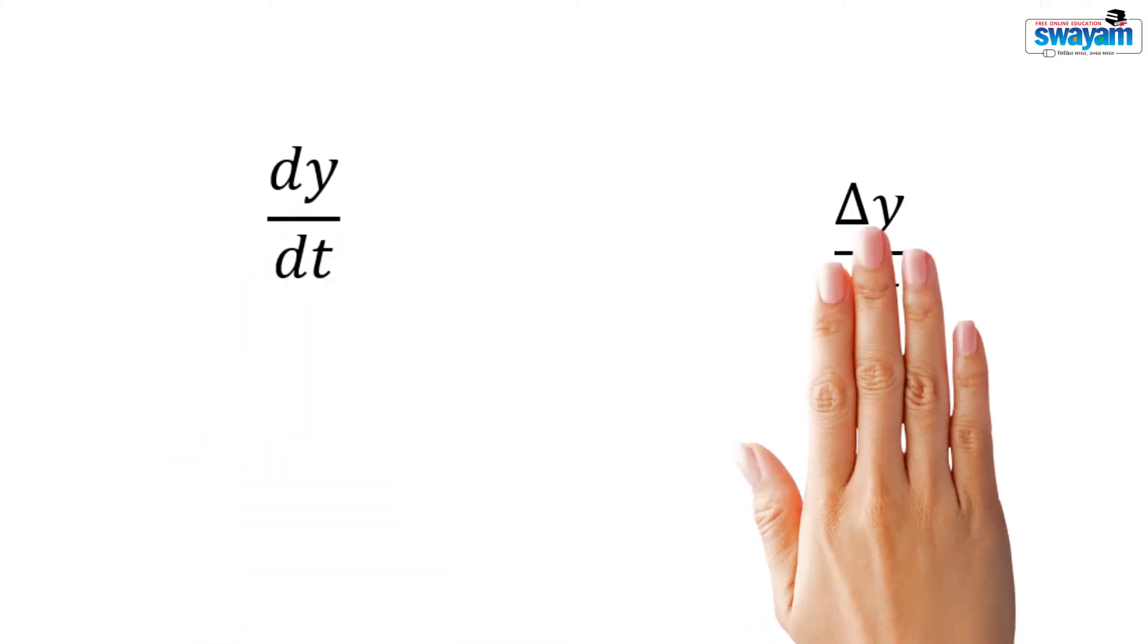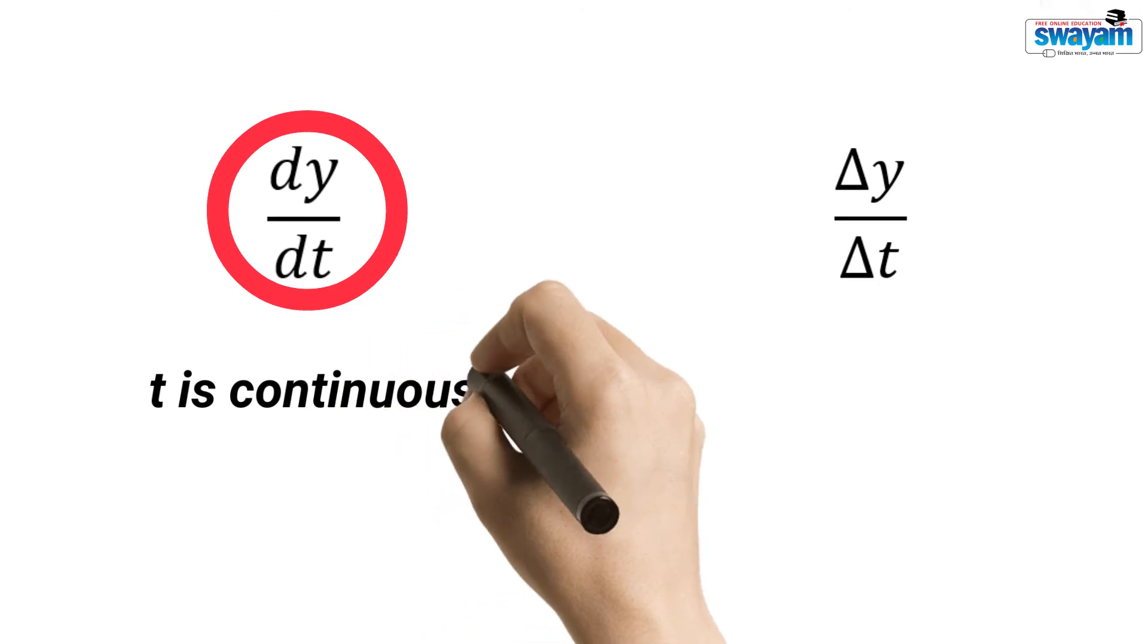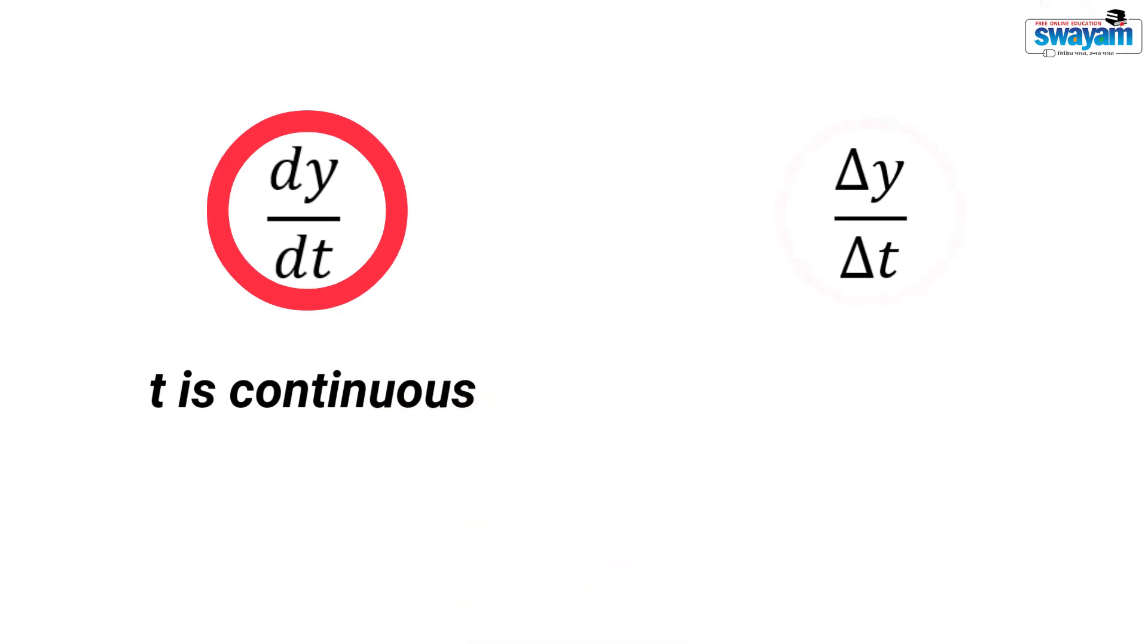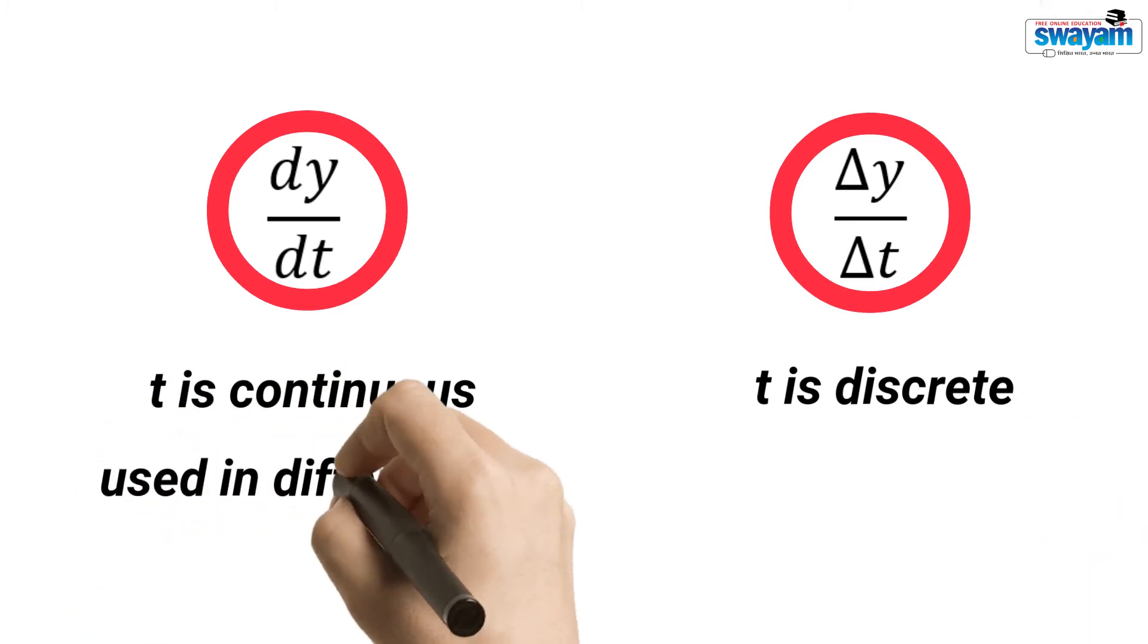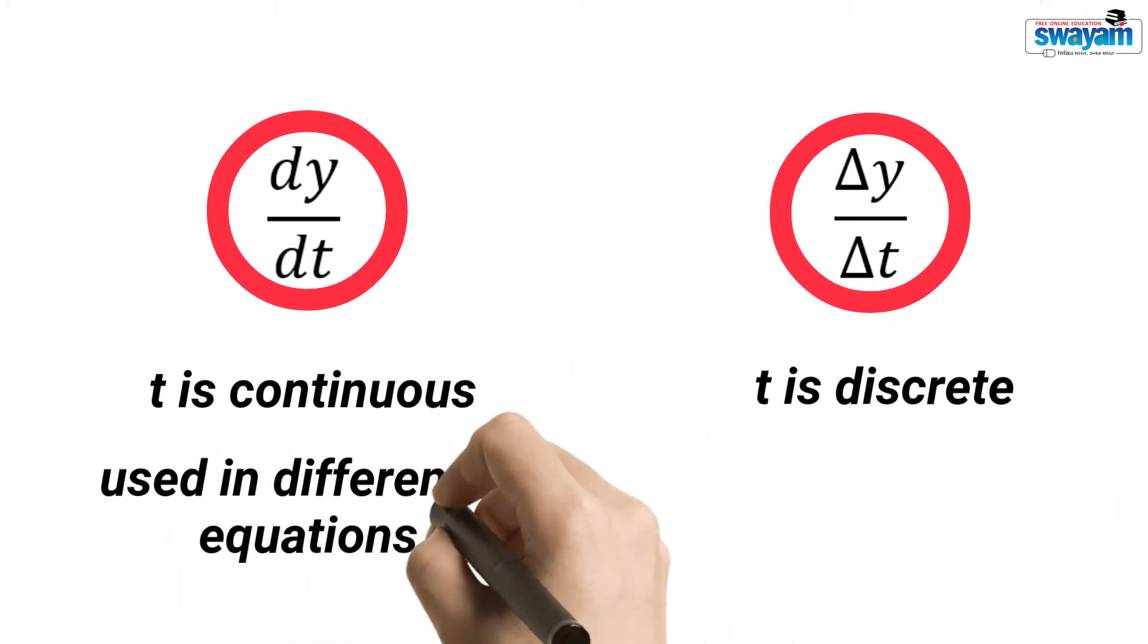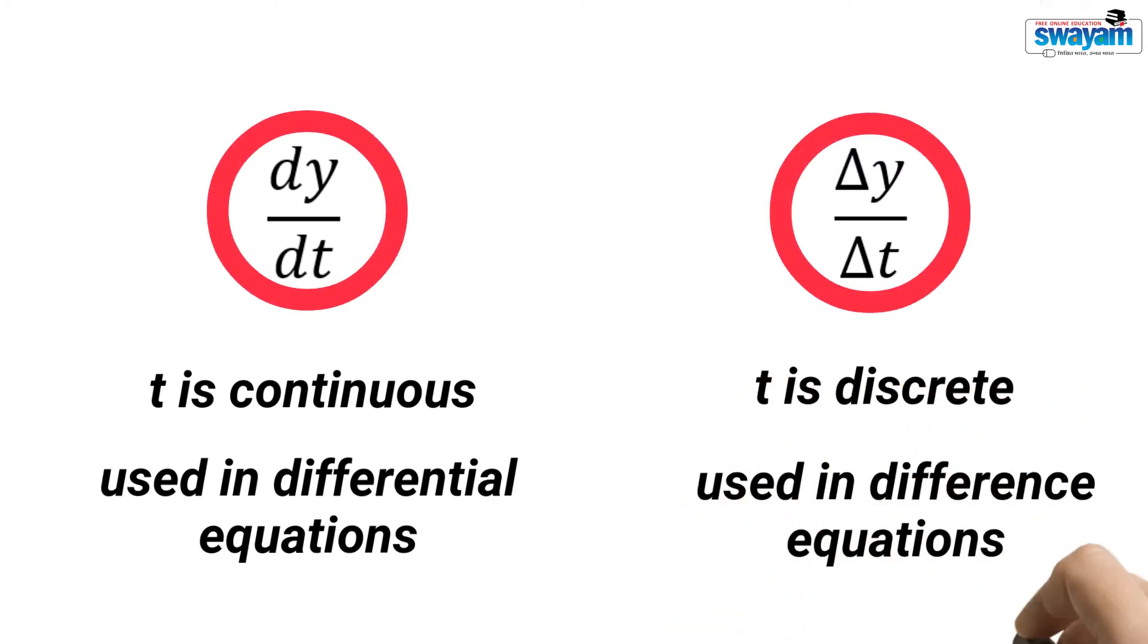You must be familiar with these two terms. dy/dt is the change in a variable y with respect to time t where time is continuous, and Δy/Δt is the change in a variable y with respect to time where time is discrete. dy/dt is used in differential equations and Δy/Δt is used in difference equations.